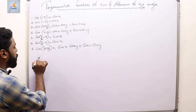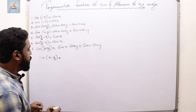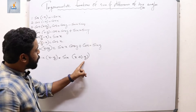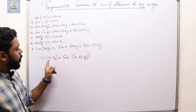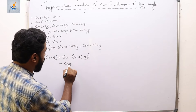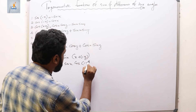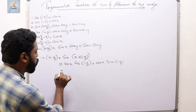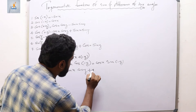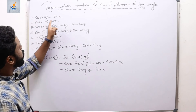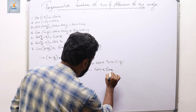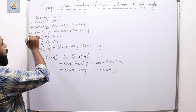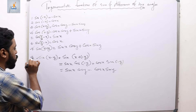Now we derive sin(x−y). Writing it as sin(x+(−y)) and substituting −y for y in sin(x+y): sin(x−y) = sin x·cos(−y) + cos x·sin(−y). Since cos(−y) = cos y and sin(−y) = −sin y, we get sin(x−y) = sin x·cos y − cos x·sin y. This is the eighth trigonometric identity.